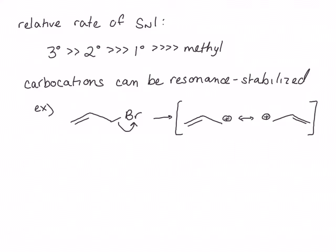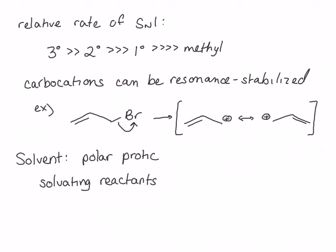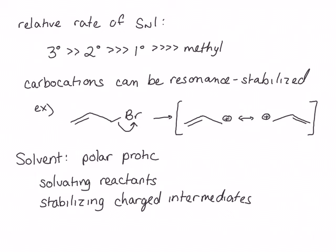Finally, the solvent that most favors an SN1 mechanism is a polar protic solvent. A polar protic solvent is best at solubilizing the reactants, and it's also best for stabilizing the charged intermediates formed in the SN1 mechanism. It also helps to stabilize the transition state that resembles the charged intermediates, lowering the activation energy and speeding up the reaction rate. Polar protic solvents weaken the nucleophile, but since the strength of the nucleophile does not affect the rate of an SN1 reaction, this weakening of the nucleophile doesn't matter.